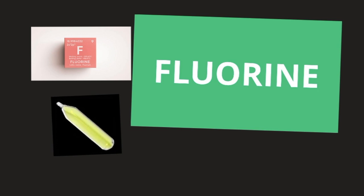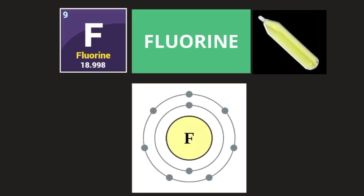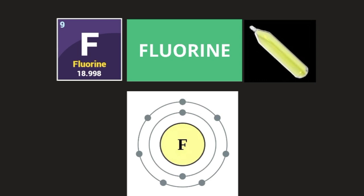Fluorine is an element that's not radioactive but is very reactive with almost every element on Earth — if not on the entire periodic table. As we can see here, we're going to take a look at its outer valence electrons, which is what essentially matters when determining the properties of an element and its interactions with other elements. Let's take a look at how many valence electrons fluorine has.